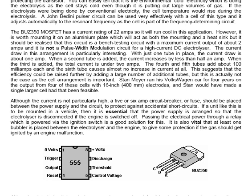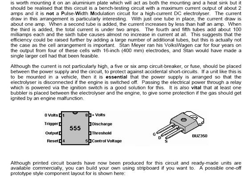Although the current is not particularly high, a 5 or 6 amp circuit breaker or fuse should be placed between the power supply and the circuit to protect against accidental short circuits. If a unit like this is to be mounted in a vehicle then it is essential that the power supply is arranged so that the electrolyzer is disconnected if the engine is switched off. Passing the electrical power through a relay which is powered via the ignition switch is a good solution for this. It's also vital that at least one bubbler is placed between the electrolyzer and the engine to give some protection if the gas should be ignited by an engine malfunction.